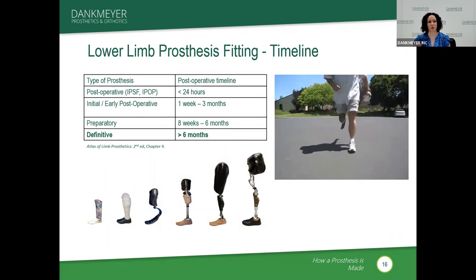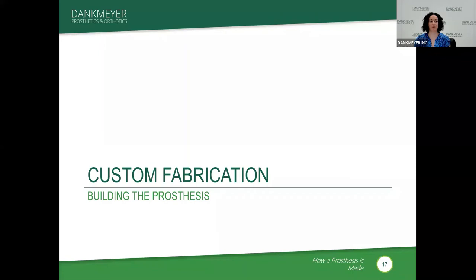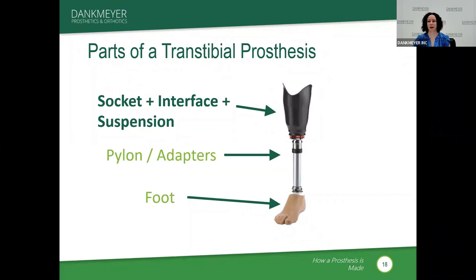How do we build this prosthesis? We'll talk specifically about the transtibial — below-the-knee — prosthesis today. It gets more complicated when adding knees, hips, or upper extremity. There are three main sections for the transtibial prosthesis: one is the socket, which includes the interface and any suspension; two is the pylons and adapters; and three is the foot.